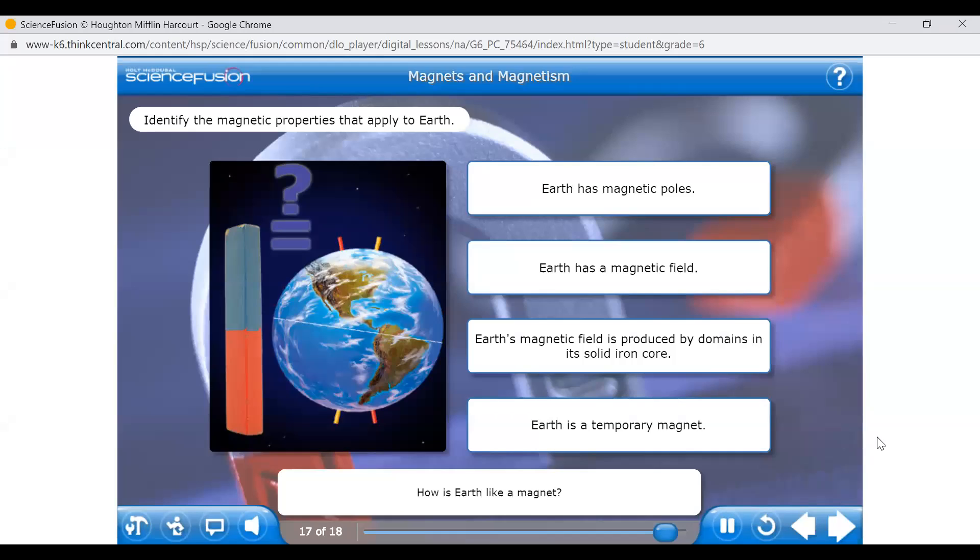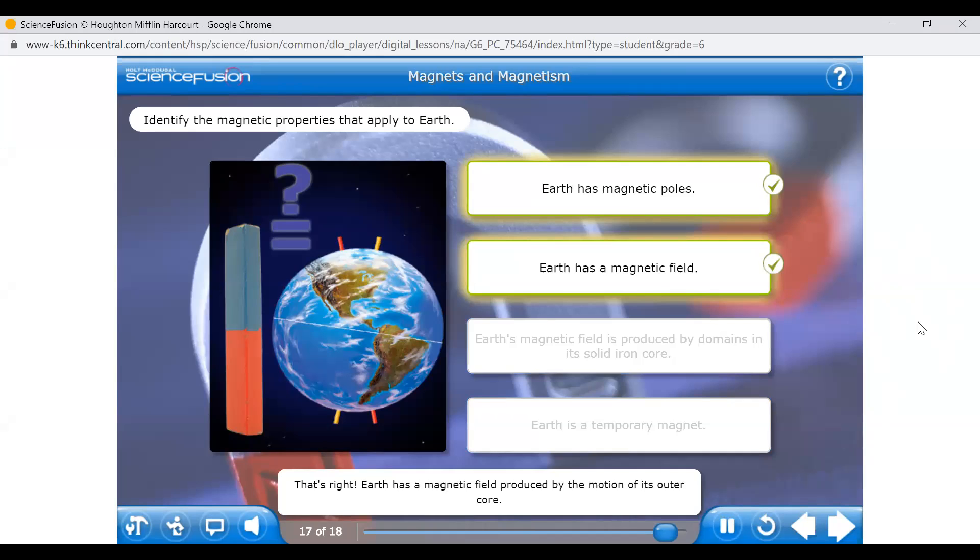How is Earth like a magnet? Select the statements that describe how Earth acts like a magnet. Absolutely! The presence of a magnetic field requires that there be two opposite poles. That's right! Earth has a magnetic field produced by the motion of its outer core. Good job! Earth has the magnetic properties of possessing a magnetic field with magnetic poles. This field is the result of the motion of Earth's liquid iron outer core and of the charges moving within that core. Earth's magnetic field is fairly strong and enduring, so it's not a temporary magnet.